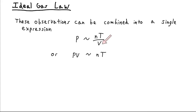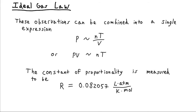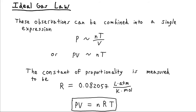We replace the proportionality with a constant, which we call R for historical reasons. If our units are liters for volume, atmospheres for pressure, kelvins for temperature, and moles for molecules, then R equals 0.082057. We can now write the ideal gas law in its most common form: PV = nRT, where pressure times volume equals the number of moles times R times the temperature in kelvins. The temperature always has to be in kelvins — it won't work in Celsius or any other scale.